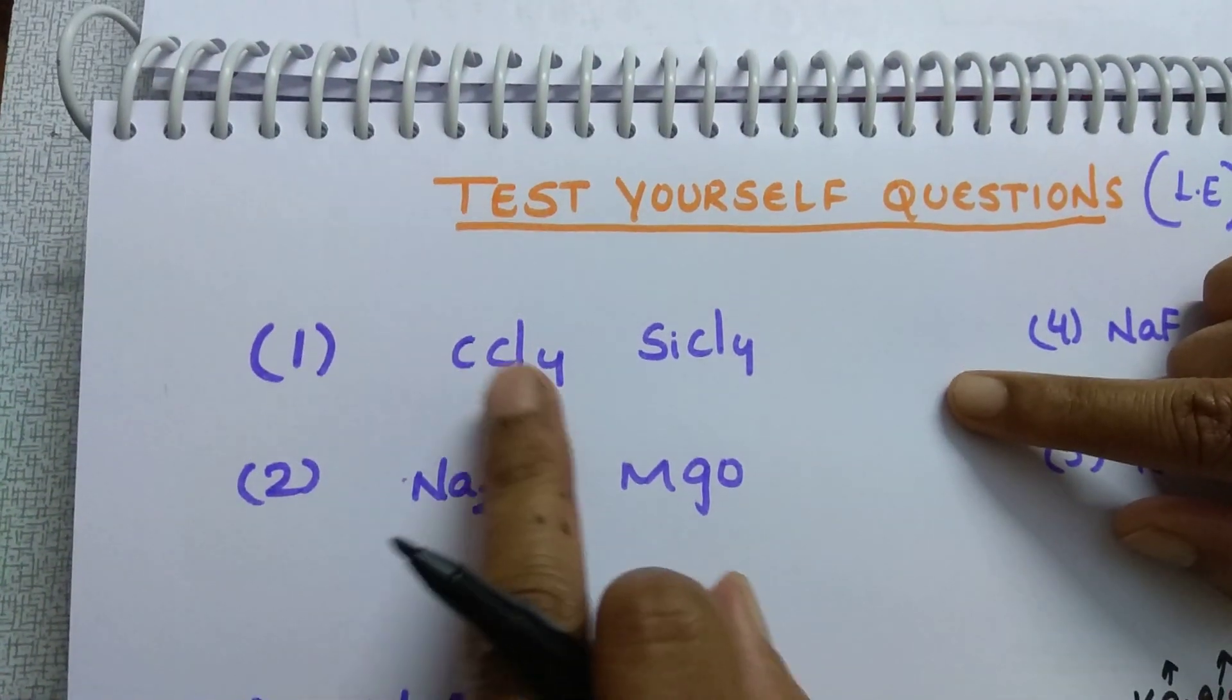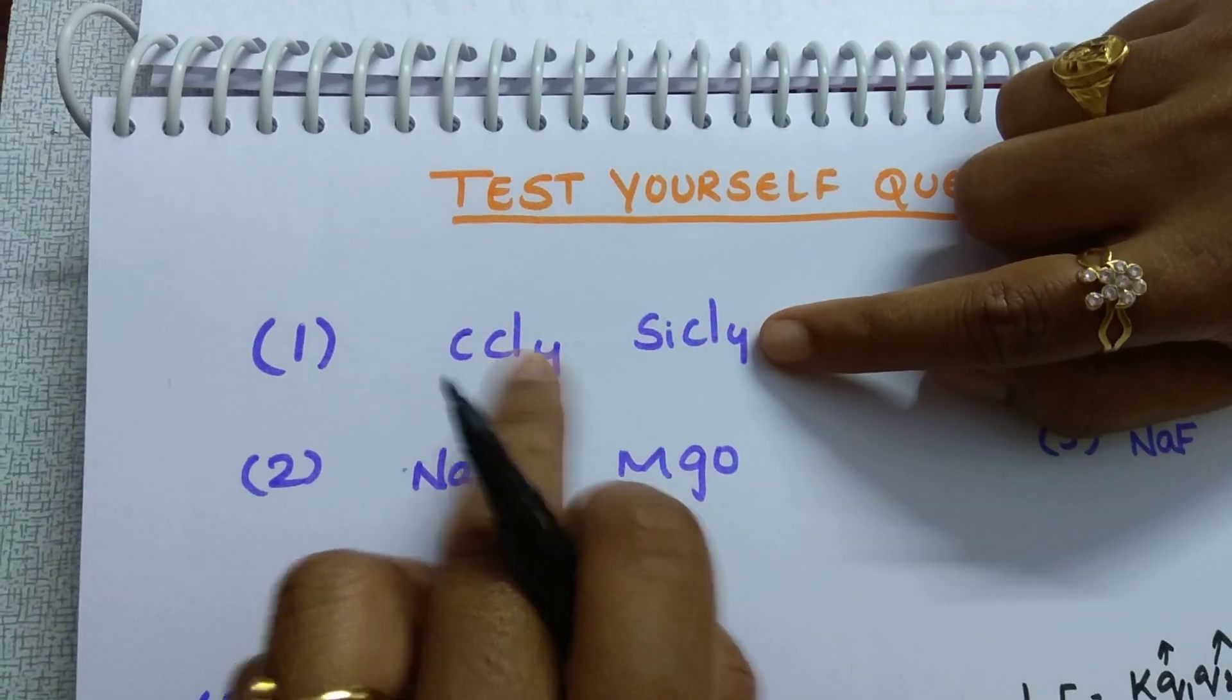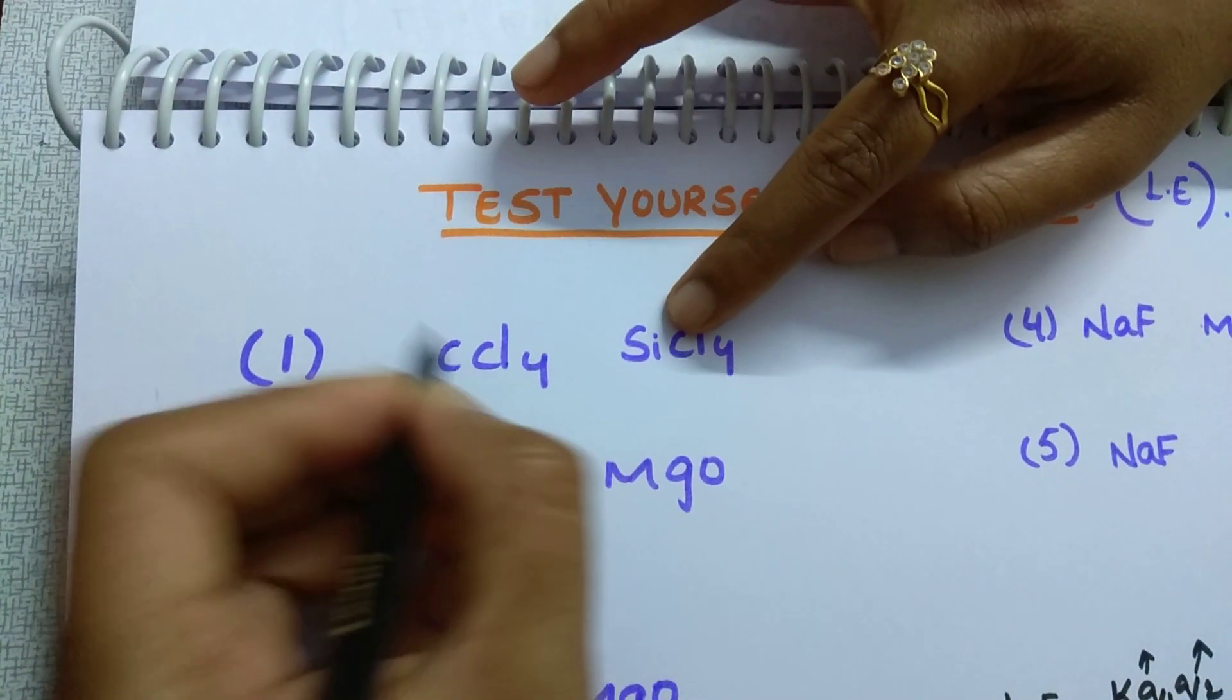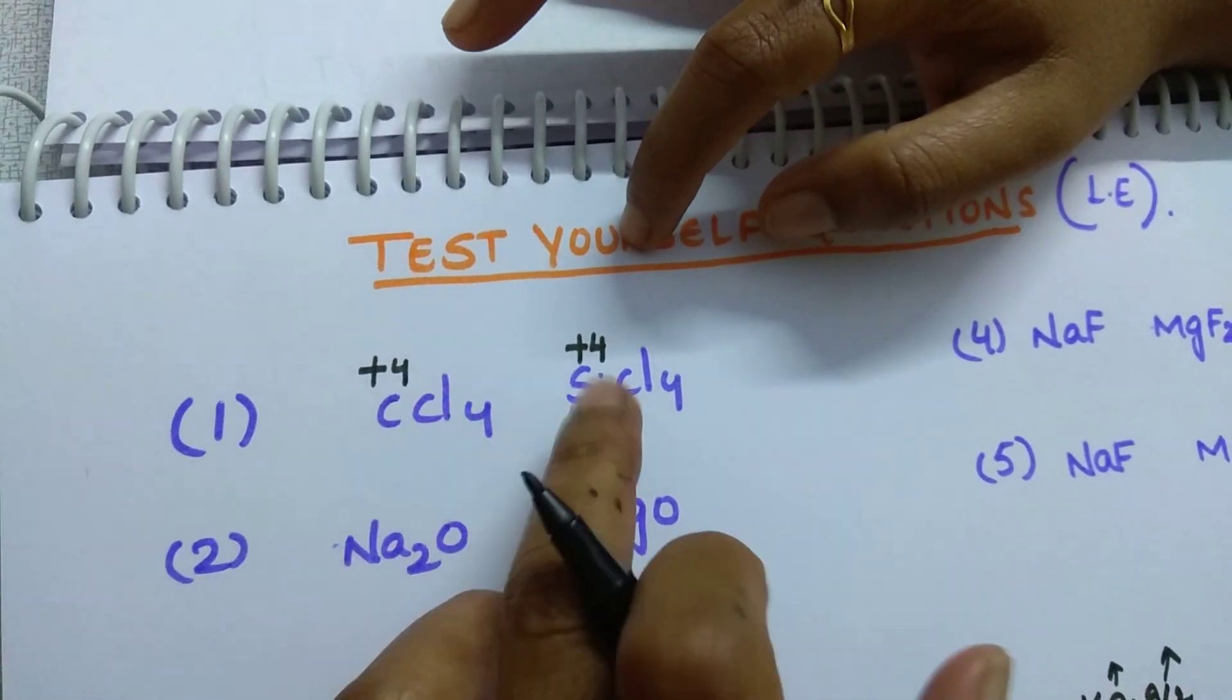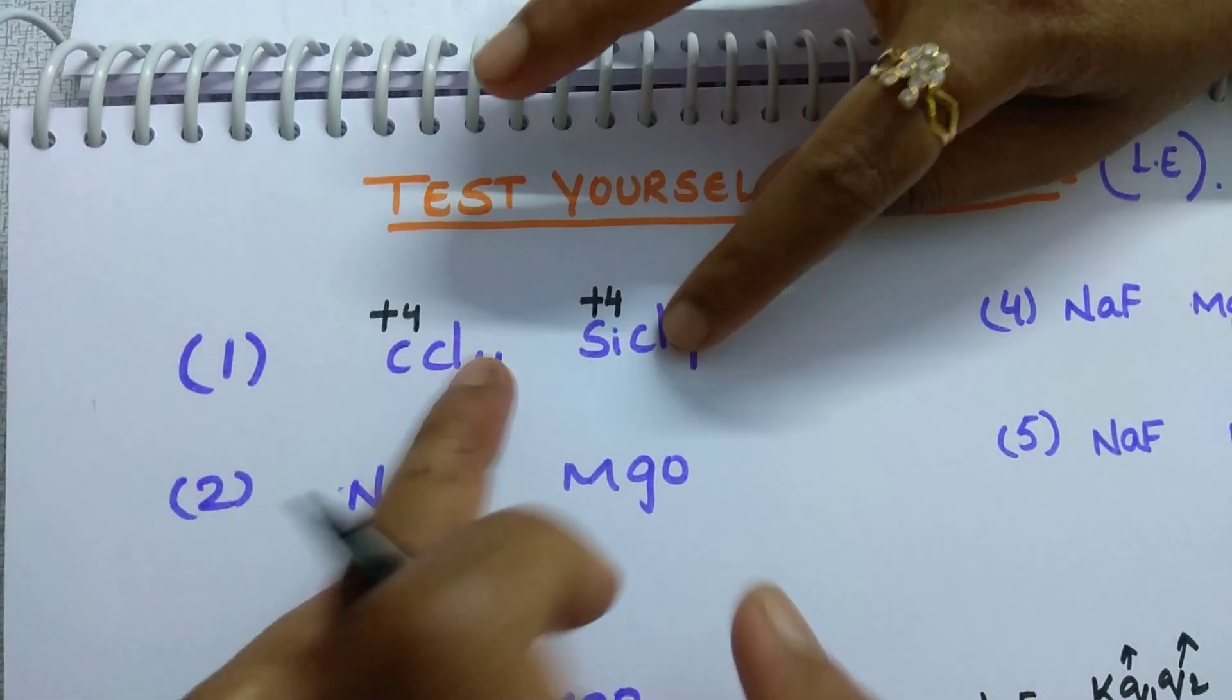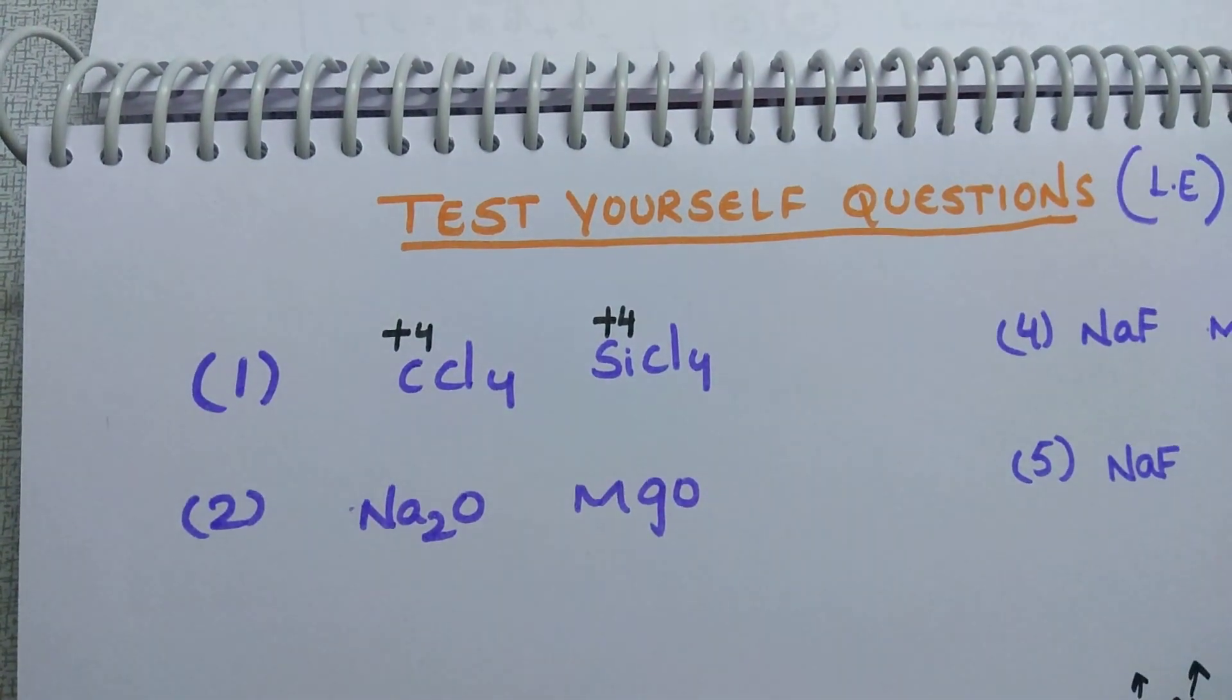First trend is CCl4, SiCl4. In this, anion part is same, so don't go through it. Cation part, you see. In this, carbon is in plus 4 state. Here, silicon is also in plus 4 state. So charge is also same. Charge is same, cation and anions also same. Then what you have to see? Based upon the size.